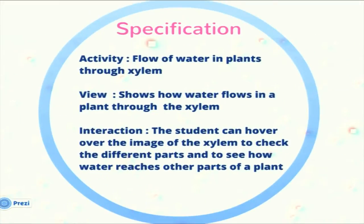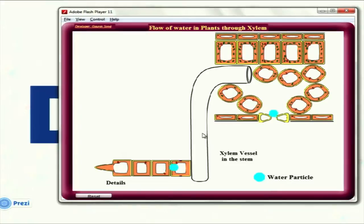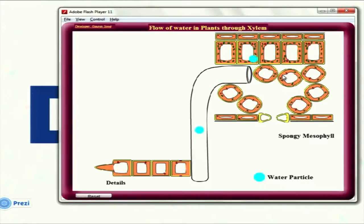Let me show you some demos of our activities. The first one is the flow of water in plants through xylem. This activity mainly shows how water is absorbed by the plant and how it moves to various parts of the plant. As you can see, the brown part below is the root tip from which water is absorbed, and it moves through the cylindrical structure which is the xylem.